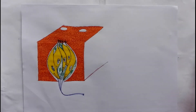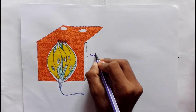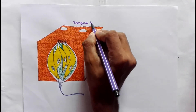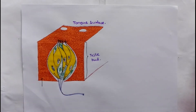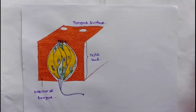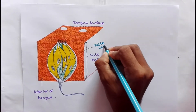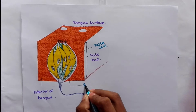Now let's see the structure of a taste bud. This whole yellow-colored structure is a taste bud. This is the superior surface of the tongue and this is the interior of the tongue. The yellow-colored cells are the taste cells, and in between taste cells there is another type of cells called supporting cells.